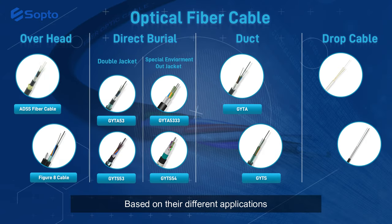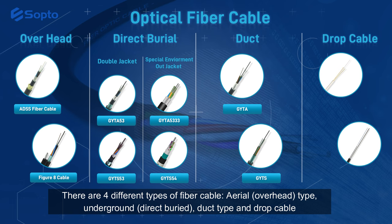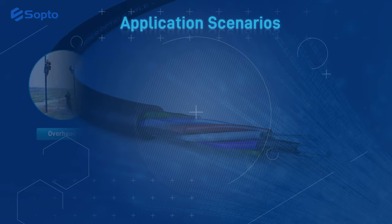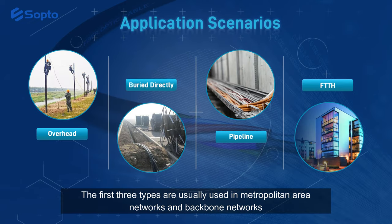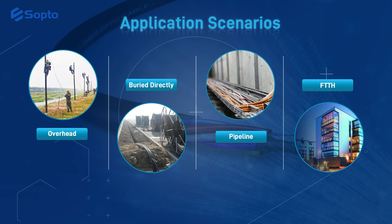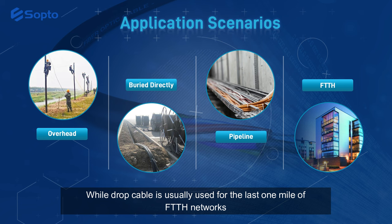Based on their different applications, there are four different types of fiber cable: aerial overhead type, underground direct buried, duct type, and drop cable. The first three types are usually used in metropolitan area networks and backbone networks, while drop cable is usually used for the last one mile of FTTH networks.